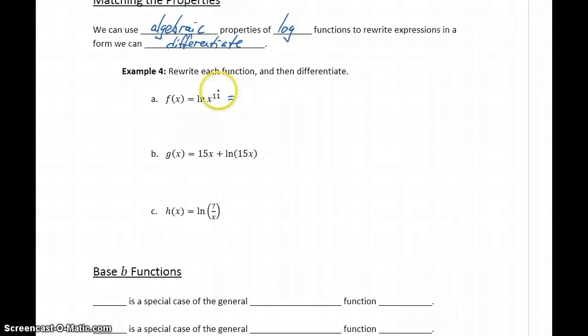So the first property we'll take a look at is one that says that for log functions, for taking the natural log of x raised to some power, we can bring that power down as a factor in front. This is similar to the process that we use for differentiating power functions, but it's important to keep in mind that this isn't the same idea. This isn't a calculus-based property. This goes back to algebraic properties of log functions.